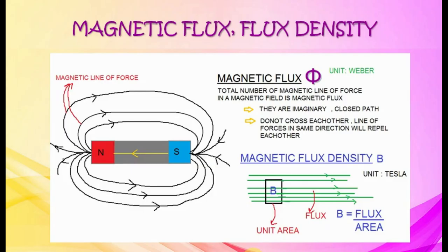Magnetic flux and flux density. The total number of magnetic lines of force is called magnetic flux phi. Its unit is Weber. Magnetic lines of force are imaginary, form a closed path, will not cross each other, and lines in the same direction repel each other. Magnetic flux density B is the flux per unit area. Its unit is Tesla.